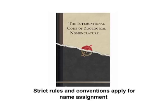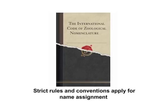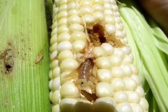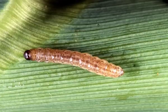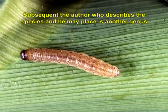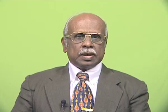Strict rules and conventions apply for name assignment, and they are codified as the International Code of Zoological Nomenclature. The species name is written, for example, as Ostrinia nubilalis Hübner. The author who originally described the species is written without parentheses. If a subsequent author redescribes the species and places it in another genus, that author's name is within parentheses. Scientific names are Latinized and usually refer to some characteristic of the animal or group named. The binomial species name is always printed in italics; if handwritten, it is underlined to indicate italics.